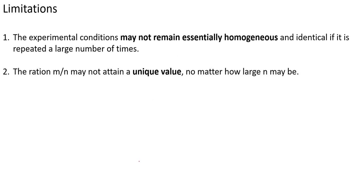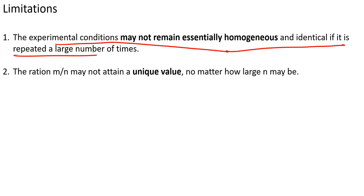But the statistical approach also has limitations. When the number of trials becomes very large, it is not necessary that all conditions remain homogeneous — the experiment conditions may not stay essentially the same when repeated many times. Also, the ratio m/n may not retain a unique value no matter how large n becomes. In those cases, the statistical approach also fails.